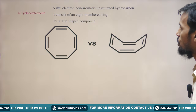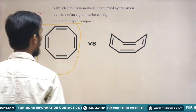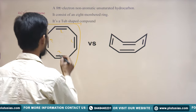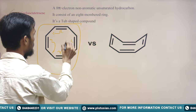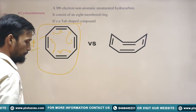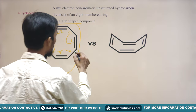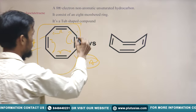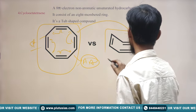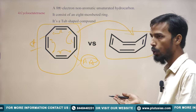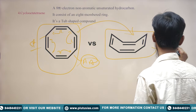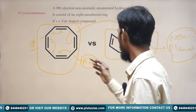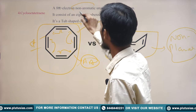Coming to the next compound — Cyclooctatetraene (COT). It is an 8 π electron system and an 8-membered ring. We can see it is cyclic, apparently all sp2 hybridized carbons with conjugation. By visualizing it would appear anti-aromatic, but to avoid this anti-aromaticity, this compound converts into a tub shape — a non-planar conformation. Since it is not planar, it does not fulfill the planarity condition, so Cyclooctatetraene is a non-aromatic compound.